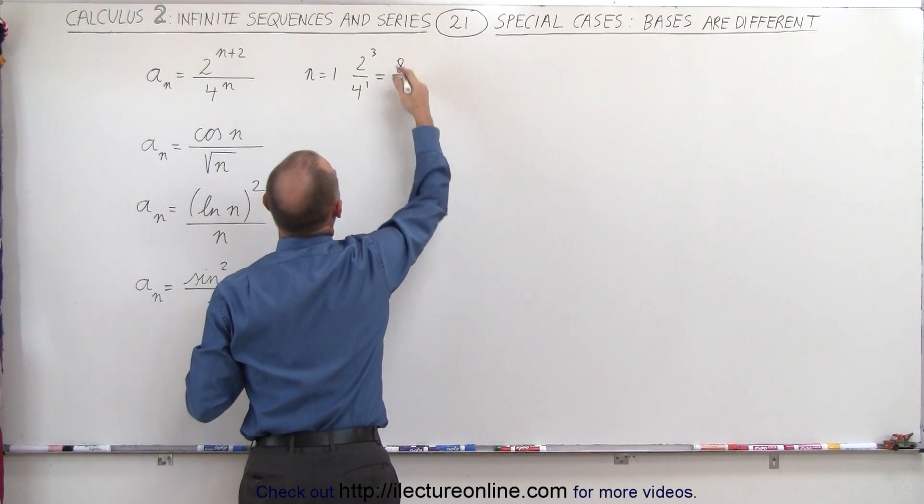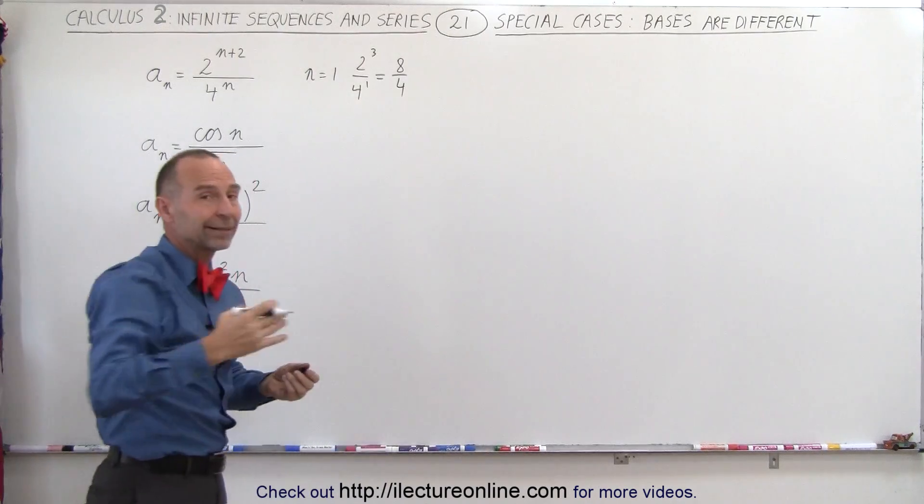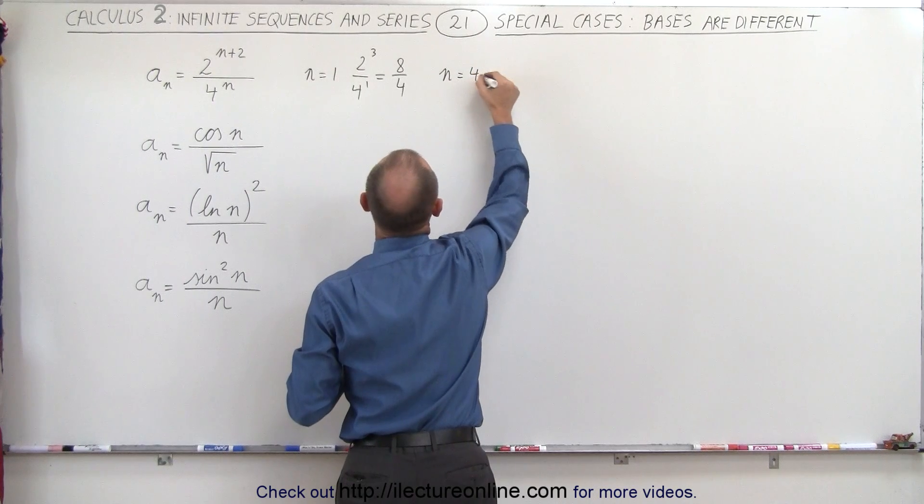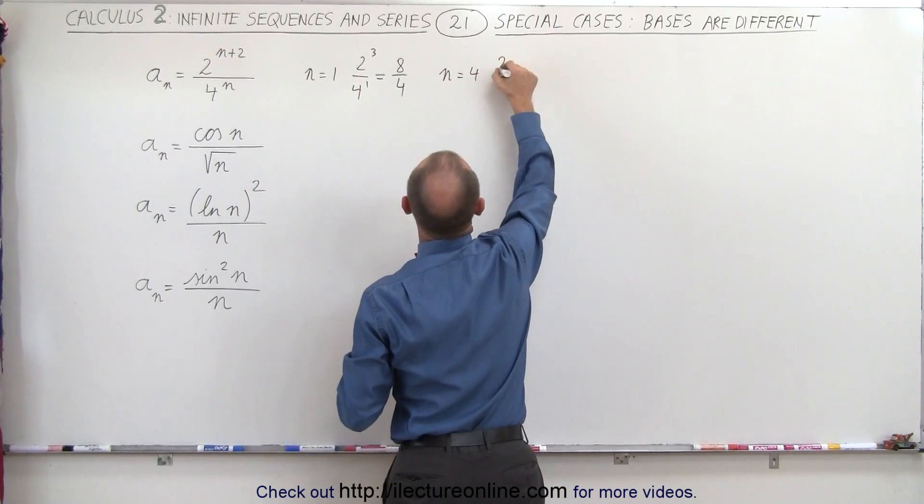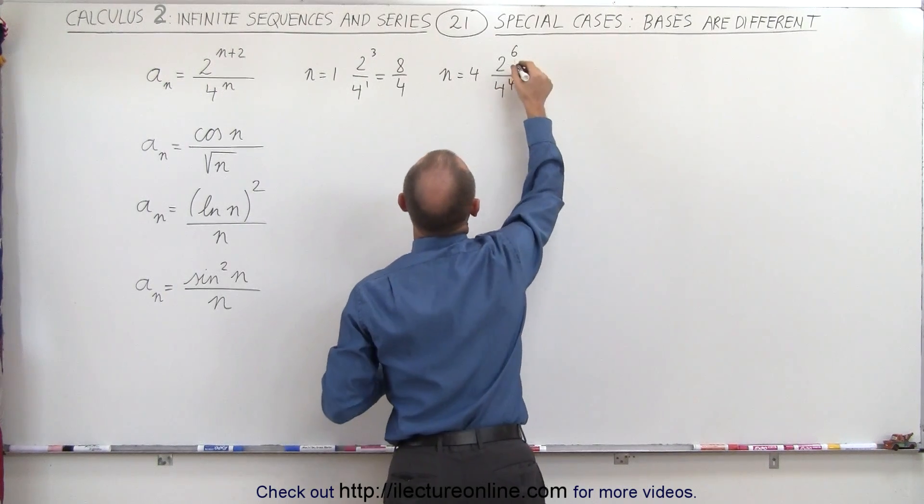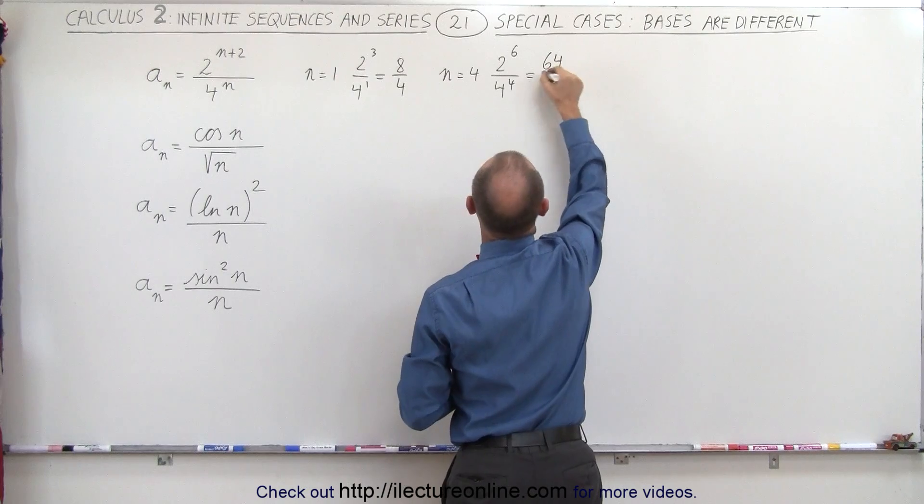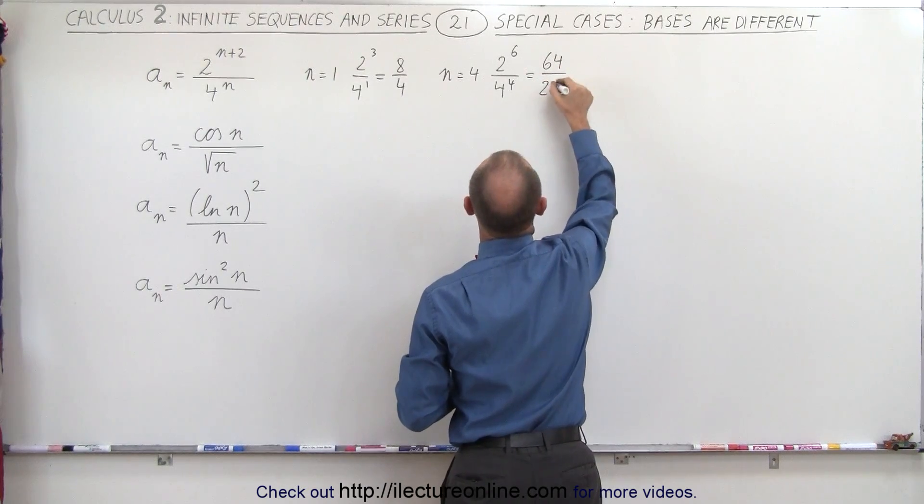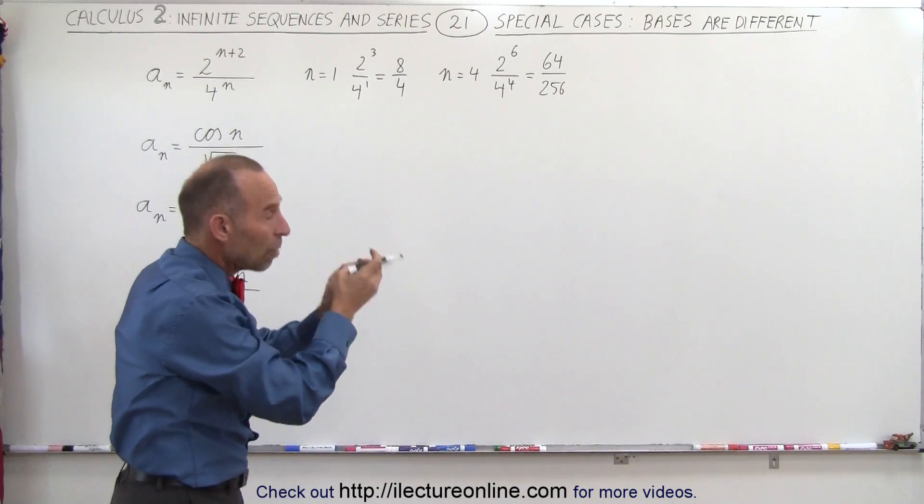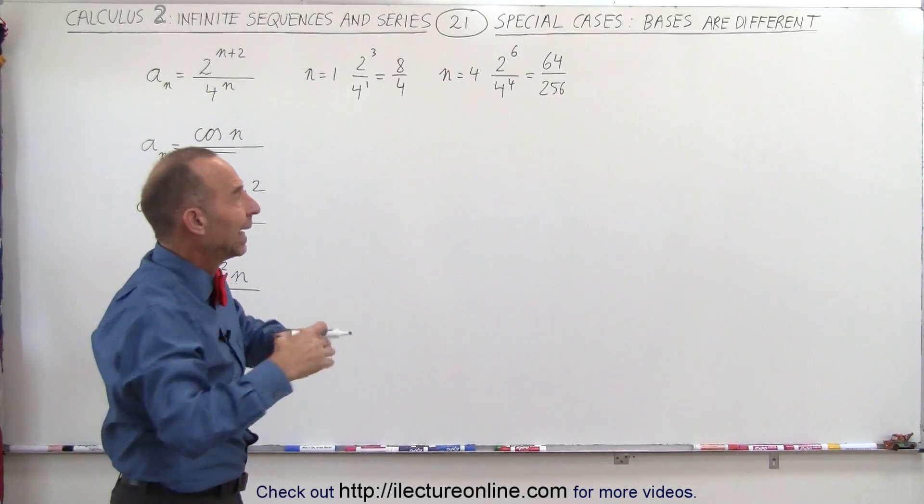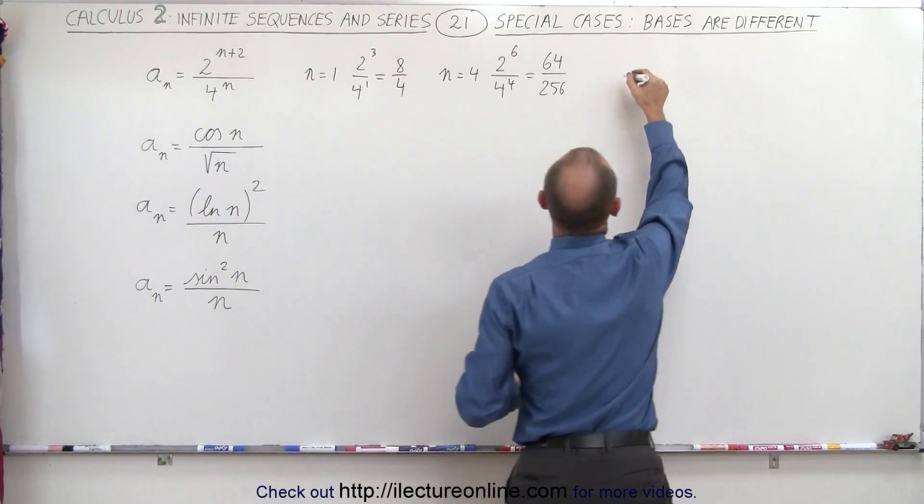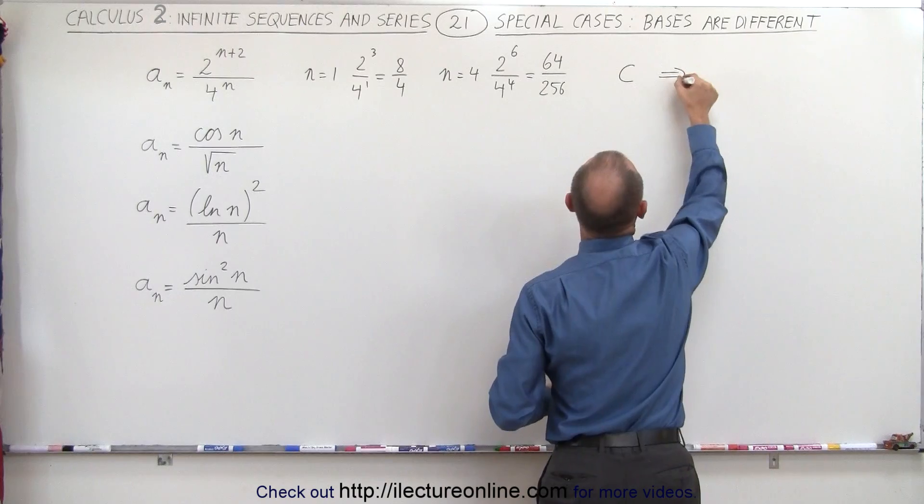As n becomes large, the difference between n and n plus 2 becomes very small, and the difference in the base begins to take over. For example, let's say that n equals 1. Then we have 2 to the 3rd power divided by 4 to the 1st power. In this case, this would be 8 divided by 4, and the numerator is bigger than the denominator. But when n becomes equal to 4, then the numerator becomes 2 to the 6th power, which is 64, and the denominator becomes 4 to the 4th power, which is 256. As n becomes large, the numerator becomes much smaller relative to the denominator, and the sequence will converge to the value of 0.